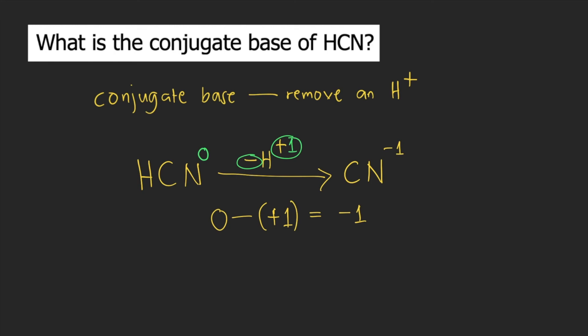So the charge of the conjugate base is negative one. Or you can simply write this as CN minus. So the conjugate base of HCN is CN minus. And that's the answer to the question.